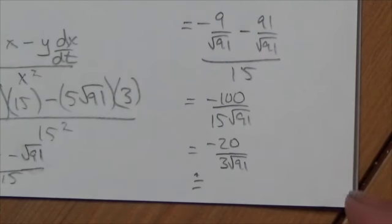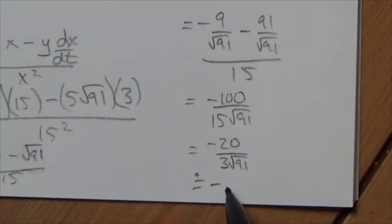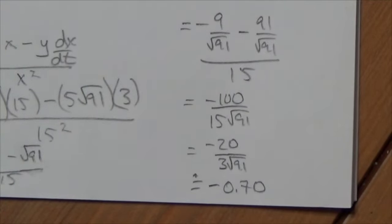But again, sometimes it does help to have that value there. So let's just go to the calculator and divide that out. So 3 root 91. So this is dropping at 0.70 per second. Every second, the slope is dropping by that amount.